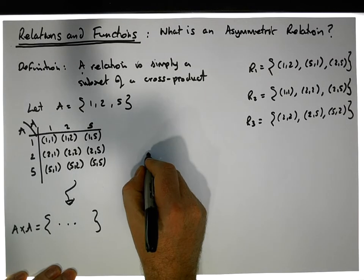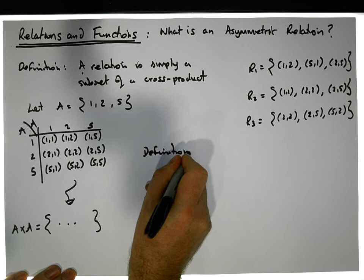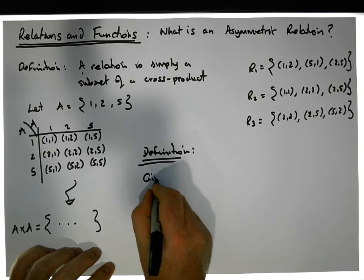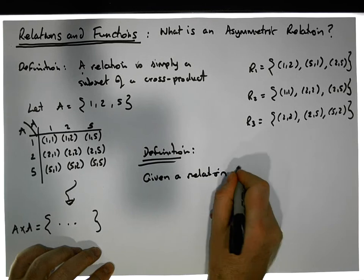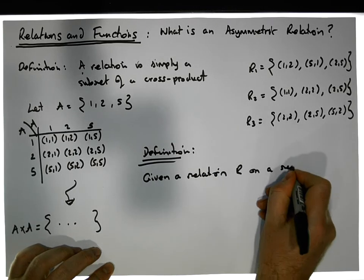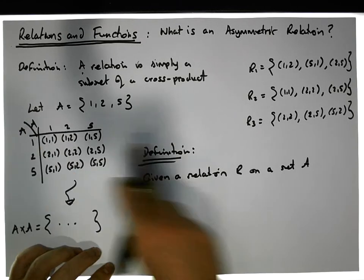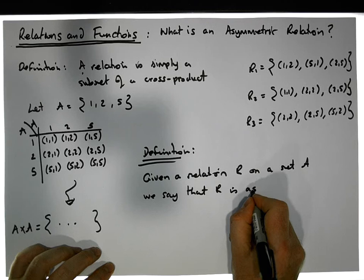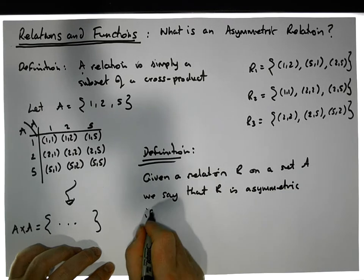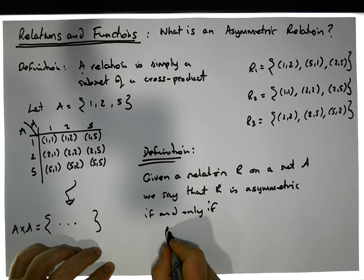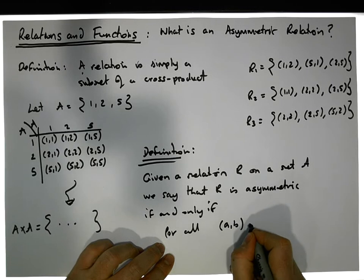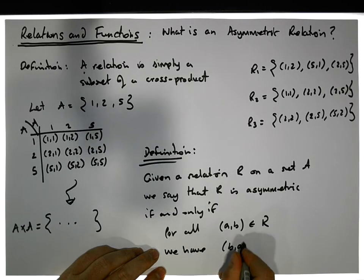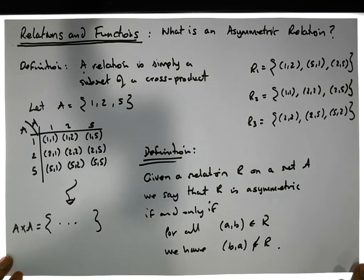To define an asymmetric relation: given a relation R on a set A, we say that R is asymmetric if and only if for all ordered pairs (a,b) that are in R, the pair (b,a) is not in R. This must be true for all ordered pairs in the relation.